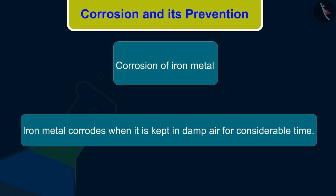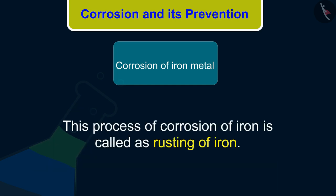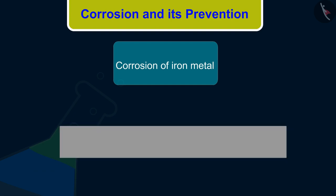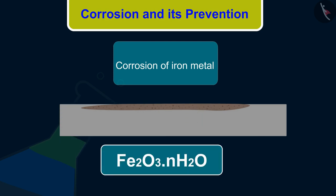Iron metal corrodes when it is kept in damp air for a considerable time — it gets covered with a reddish-brown flaky substance called rust. This process of corrosion of iron is called rusting of iron. Rust is soft and porous and gradually falls off from the surface, and then the iron below starts corroding. During rusting, iron metal combines with oxygen in air in the presence of water to form hydrated iron(III) oxide.